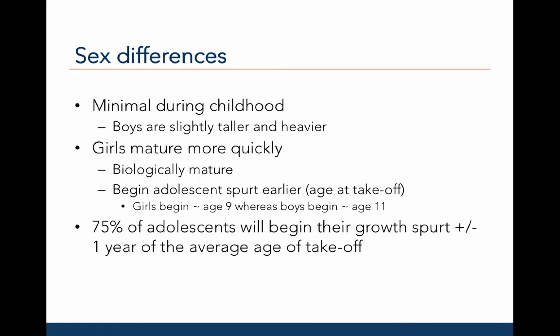The differences between males and females during childhood is relatively small. Generally, males are slightly taller and heavier than females across all ages. However, females mature much more quickly, and at any given age, they are biologically more mature than their male counterparts. The adolescent growth spurt occurs earlier in females. The age of takeoff is usually about 9 for females and about 11 for males. Interestingly, adolescents begin their growth spurt around one year plus or minus around the average time of takeoff.